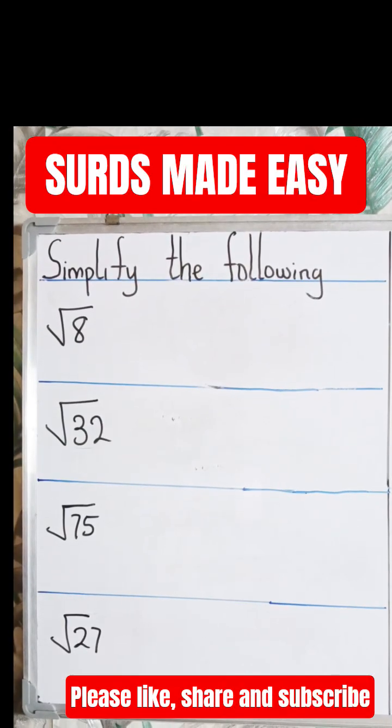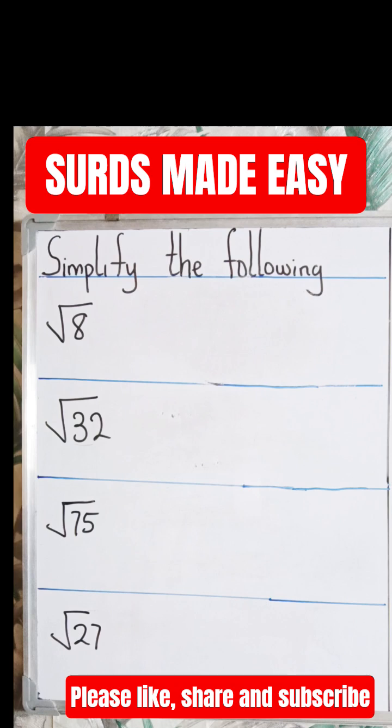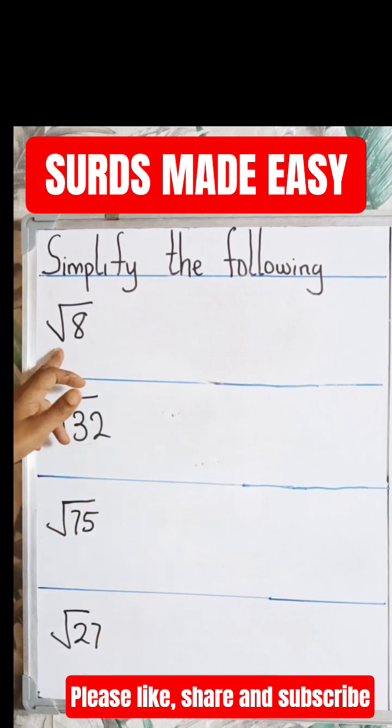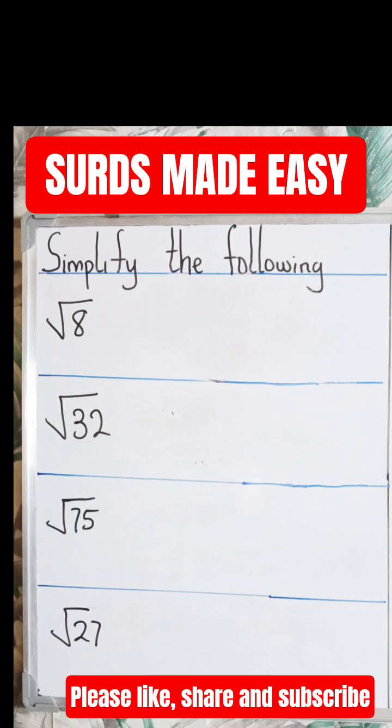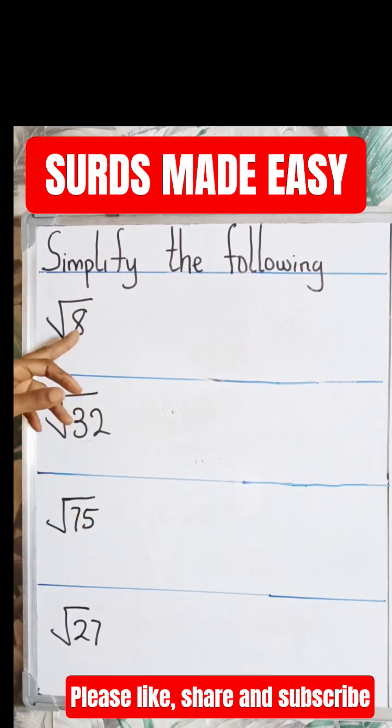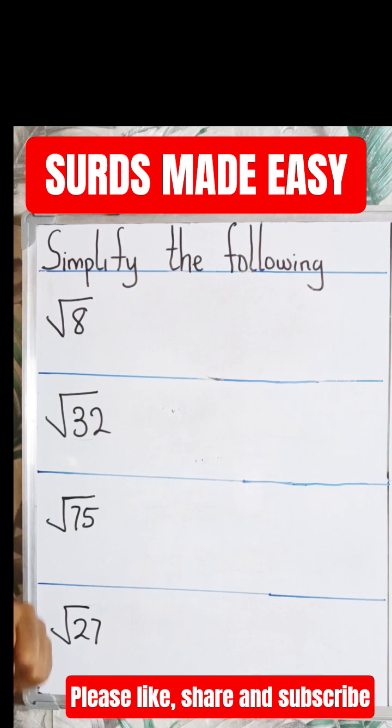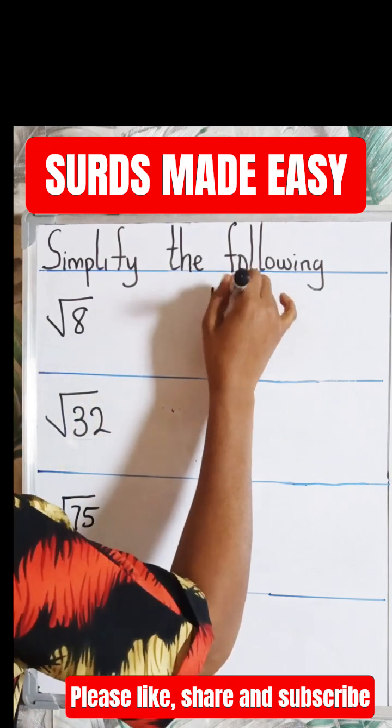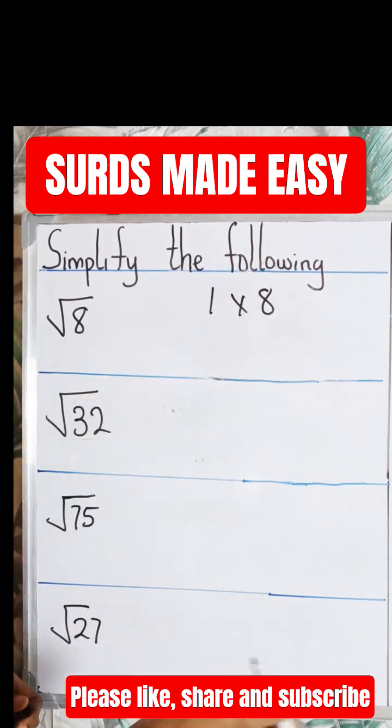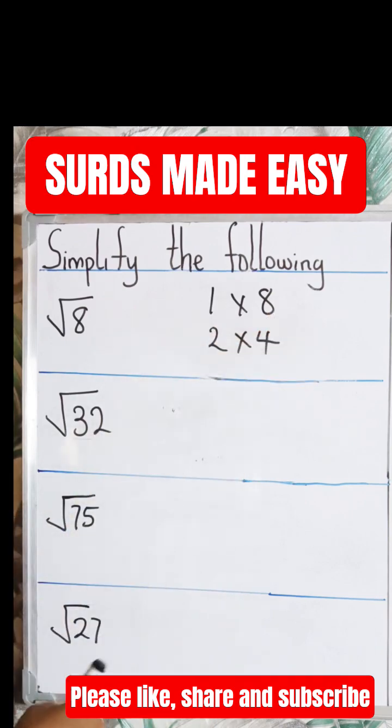Welcome to today's video. Let's simplify the following. We have questions here on surds. Now this is root 8 and we're asked to simplify this. How do we go about that? First of all, we have to look for the factors of 8 such that one of the factors has to be a perfect square.